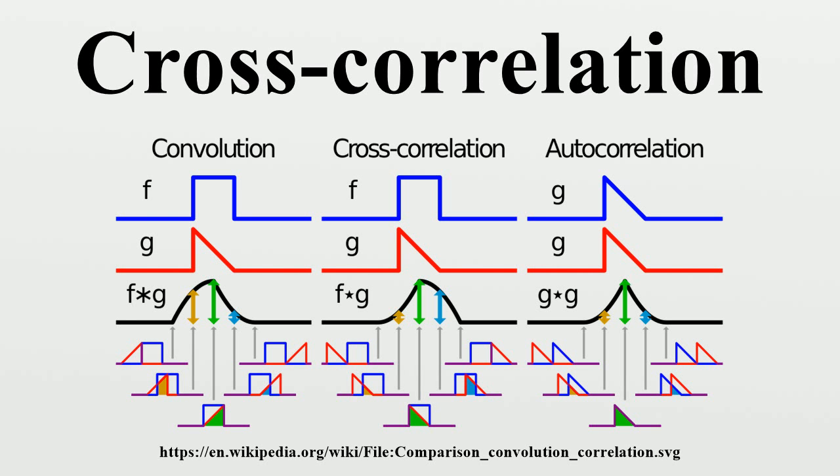That the cross-covariance and cross-correlation are independent of t is precisely the additional information conveyed by the requirement that are jointly wide-sense stationary. The cross-correlation of a pair of jointly wide-sense stationary stochastic processes can be estimated by averaging the products of samples measured from one process and samples measured from the other.